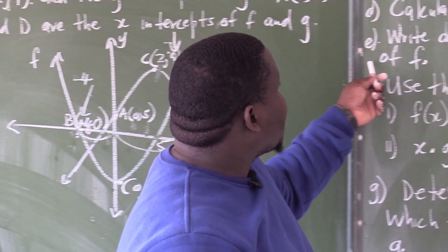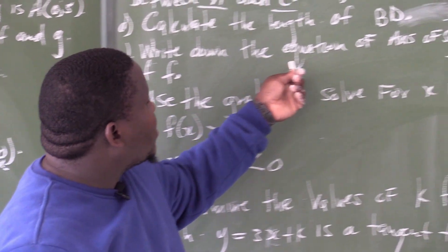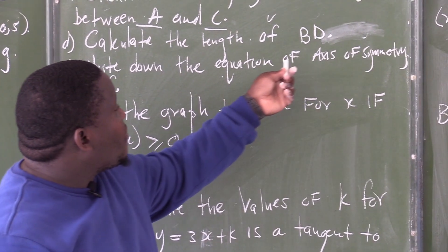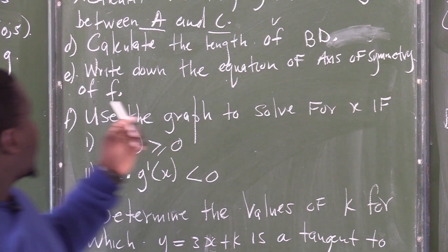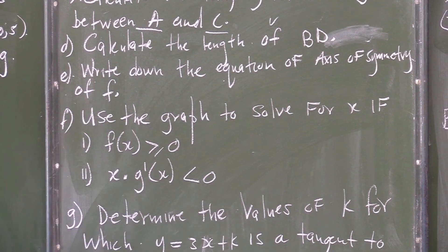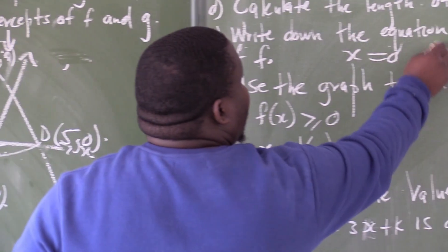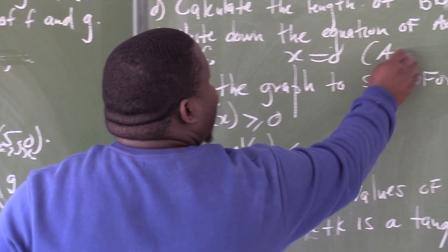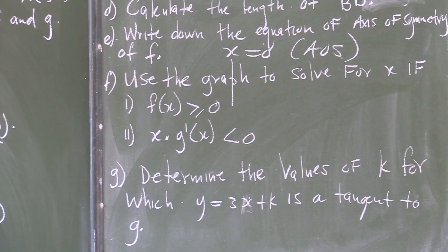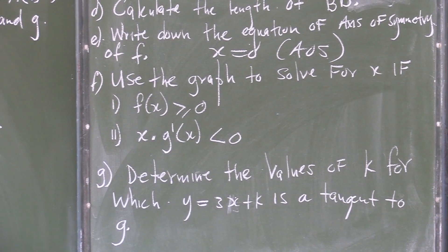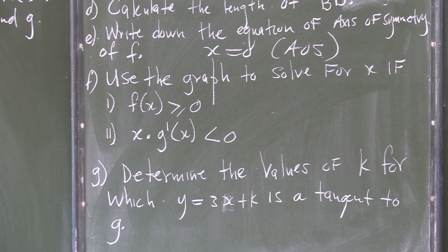The next question says, write down the equation of the axis of symmetry of f. So, my answer should say x equal to 0 is my axis of symmetry.